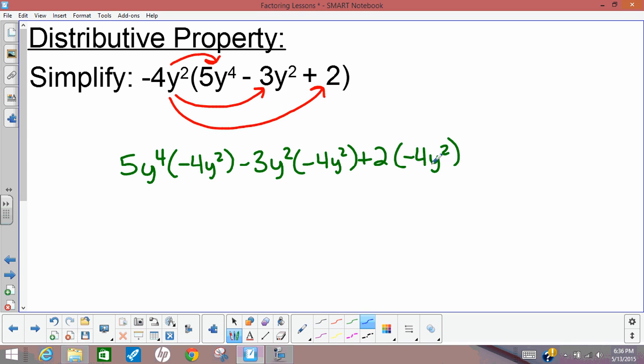So each term is getting multiplied by negative 4y squared. So now we need to simplify and actually do the multiplication. Now a quick refresher: if I have variables that have exponents and the variables are the same, so the base is the same, all I need to do when I'm multiplying is add the two exponents. So first I'll multiply 5 times negative 4 to get negative 20, and then y to the 4th times y squared is just y, and then 4 plus 2 gives us 6.